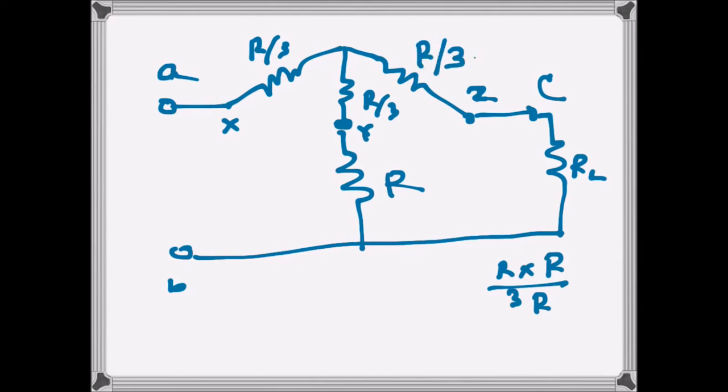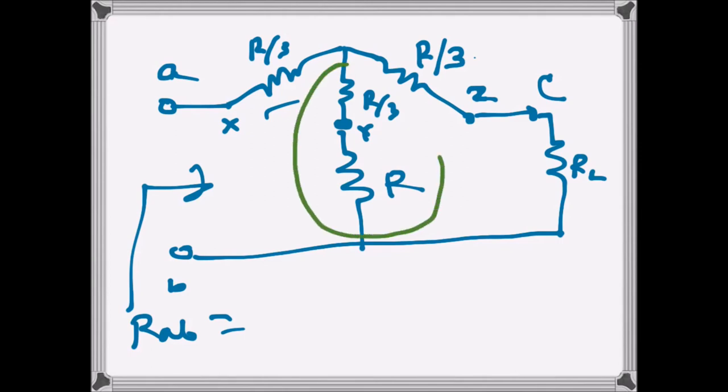So now what we have here is, since we need to find R_ab. R_ab as seen from here, R_ab will be this resistance plus this branch, I will use a different color, this branch parallel this branch, and these two are in series. So they are of the same value, so we have R over 3 plus R over 3 plus R.